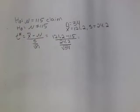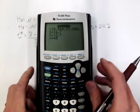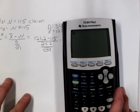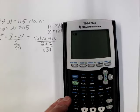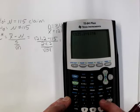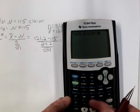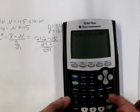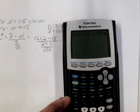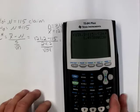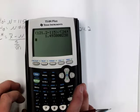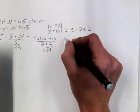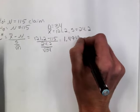Putting this into the calculator with parentheses in the numerator and denominator — because the calculator can't read my mind — do you get a value of about 1.494? Yes, so the test statistic is approximately 1.494.